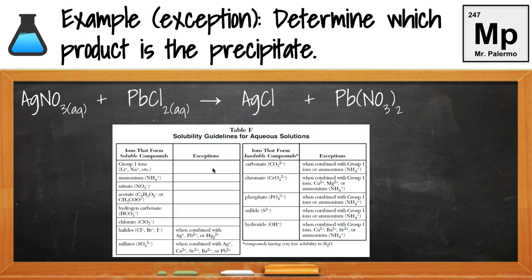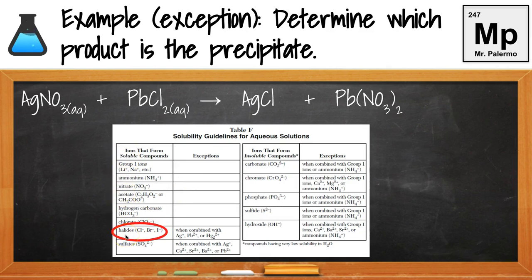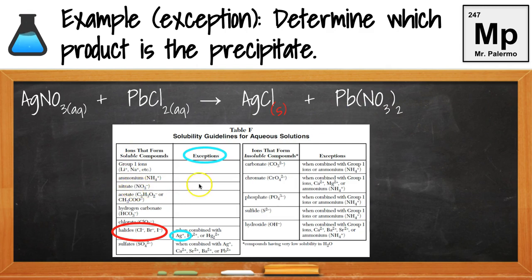Let's look at another example: determine which product is the precipitate — which product will form a solid and not dissolve. We have silver chloride and lead nitrate. For silver chloride, I look up the anion Cl-. I find it on Table F — it's a halide, in the soluble column. But there's an exception: except when combined with Ag+, silver. Since this is silver chloride, it's an exception, so it's no longer soluble — it's insoluble, meaning it forms a solid precipitate. I label this with an S for solid. For Pb(NO3)2, I look up NO3 — nitrates are always soluble with no exceptions — so it dissolves and forms an aqueous solution, labeled AQ.